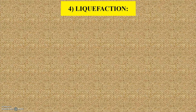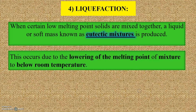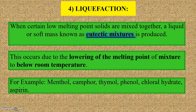The next reason is liquefaction. When certain low melting point solids are mixed together, a liquid or soft mass known as a eutectic mixture is produced. This occurs due to the lowering of the melting point of the mixture to below room temperature. The medicaments showing this type of behavior are menthol, camphor, thymol, phenol, chloral hydrate, and aspirin.